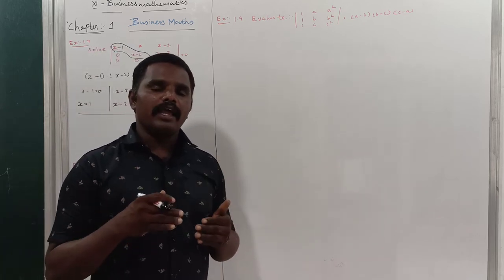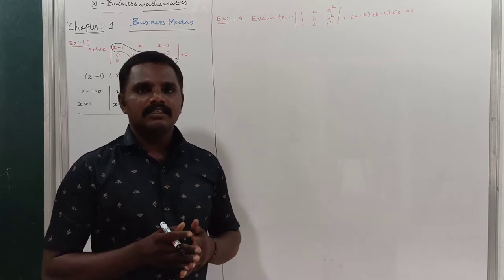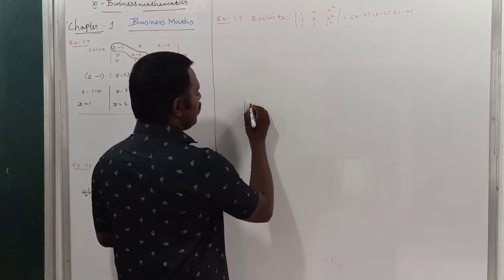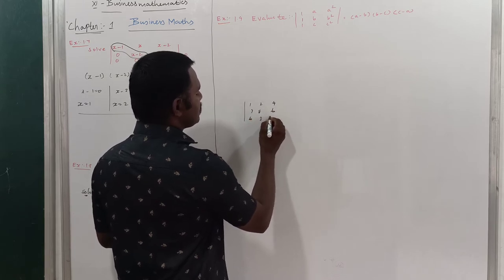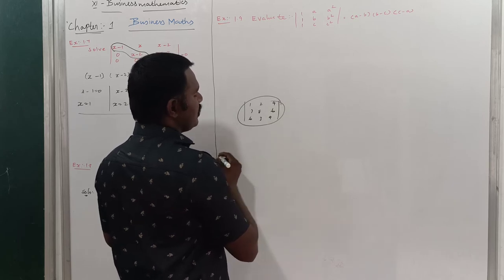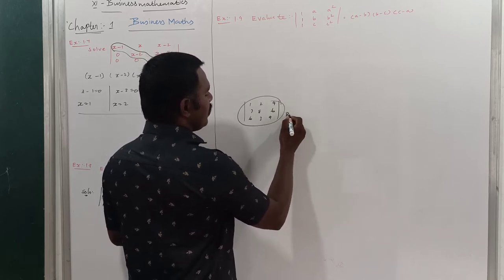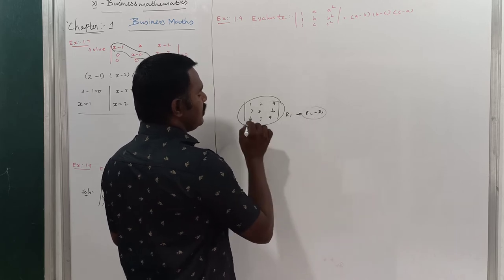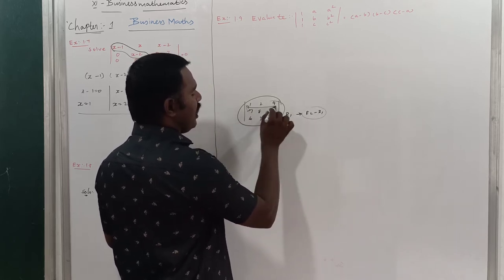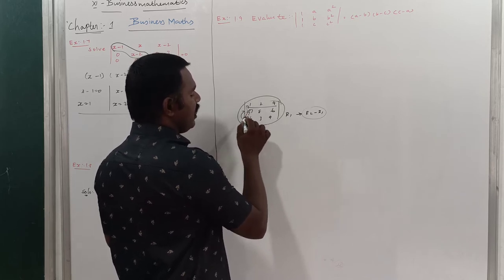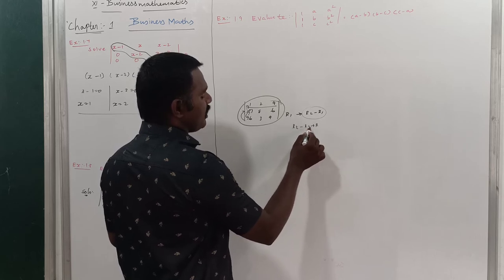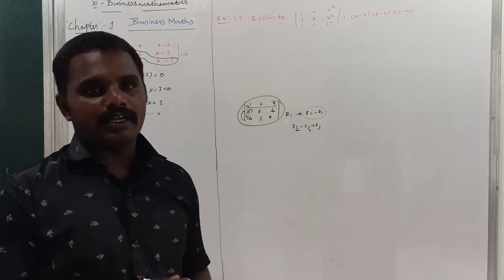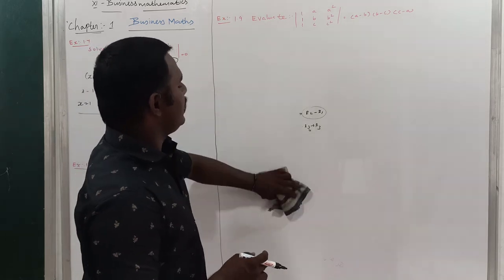The property is: for any two rows or any two columns, you can add or subtract them and write the result back into one of those rows or columns. For example, with matrix [1, 2, 4; 7, 8, 6; 6, 3, 4], you can replace R1 with R1−R2, or replace R2 with R2−R3. This is valid only for determinants, not matrices in general.